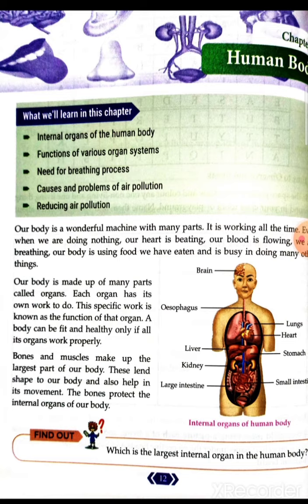There are also internal organs which help us in various ways. In this chapter we will learn about those internal organs of our body, functions of those organ systems, the need for breathing processes, causes and problems of air pollution, and how to reduce air pollution problems.